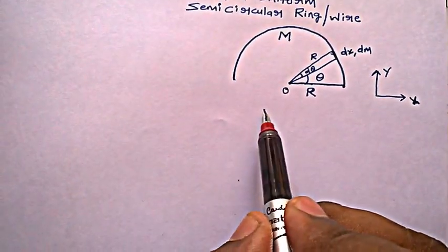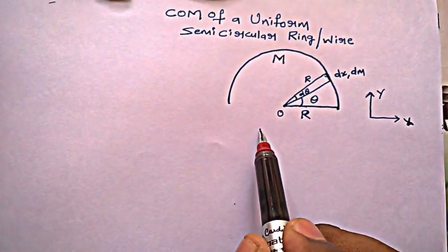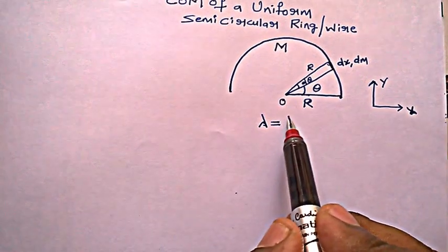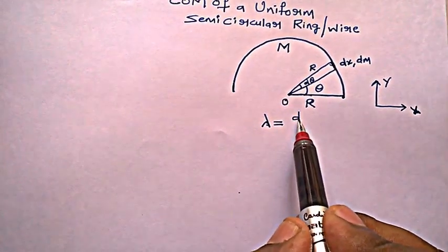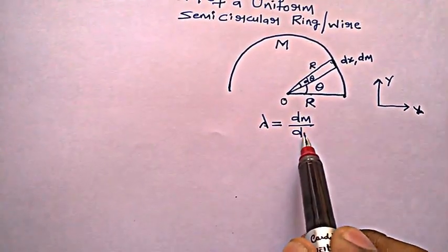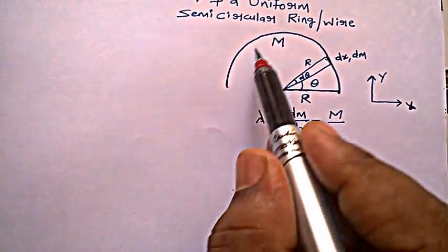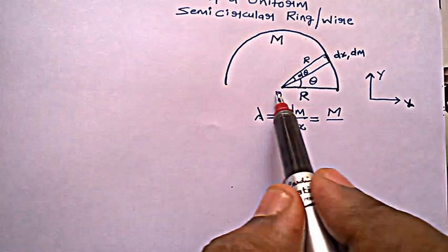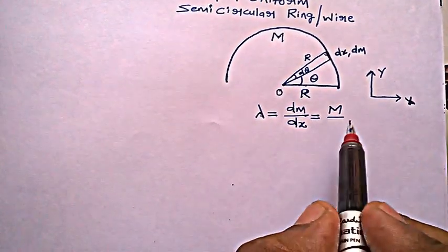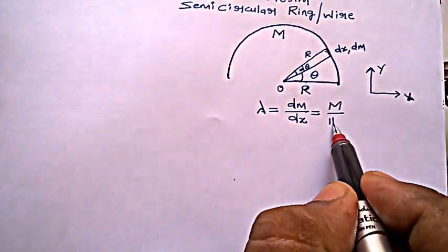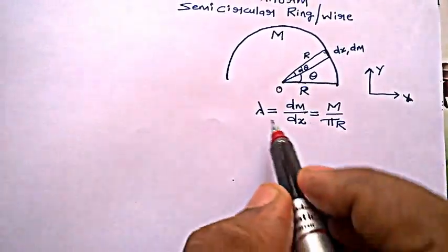So I have chosen linear mass density lambda. I will choose the same thing here which is mass dm by dx, which is also capital M by entire length. Since R is the radius, the entire length would be semicircle length, which is π into R. So this is the lambda.